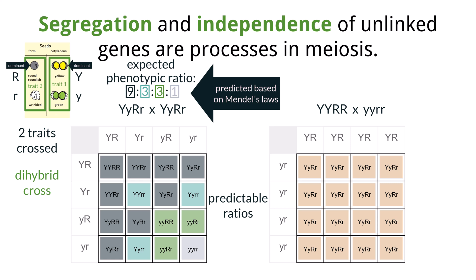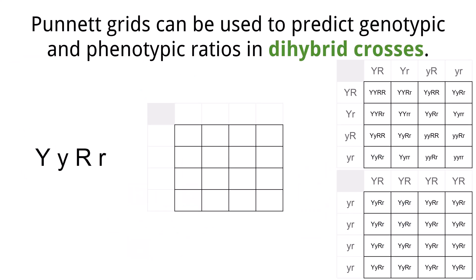Mendel's Second Law, the Law of Independent Assortment, states that each gene is passed on independently of other genes. In other words, just because the pea is green does not mean that it has to be wrinkled.